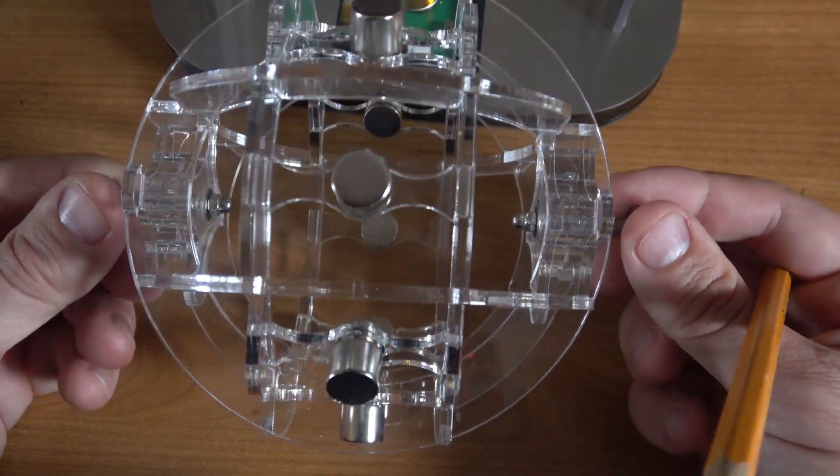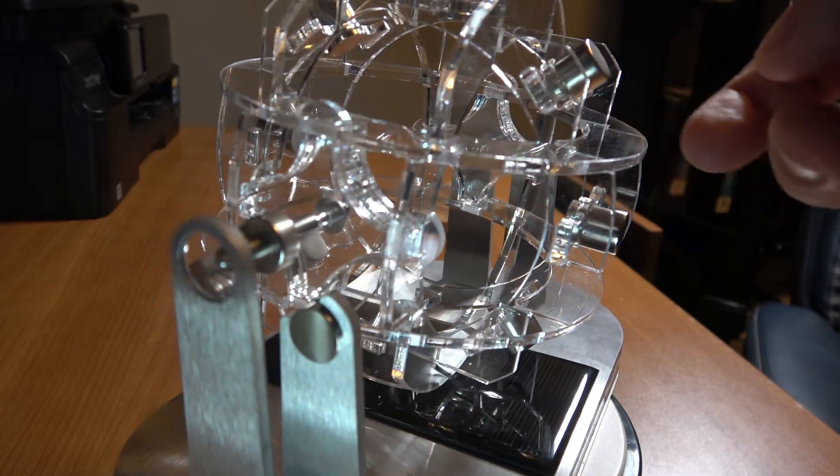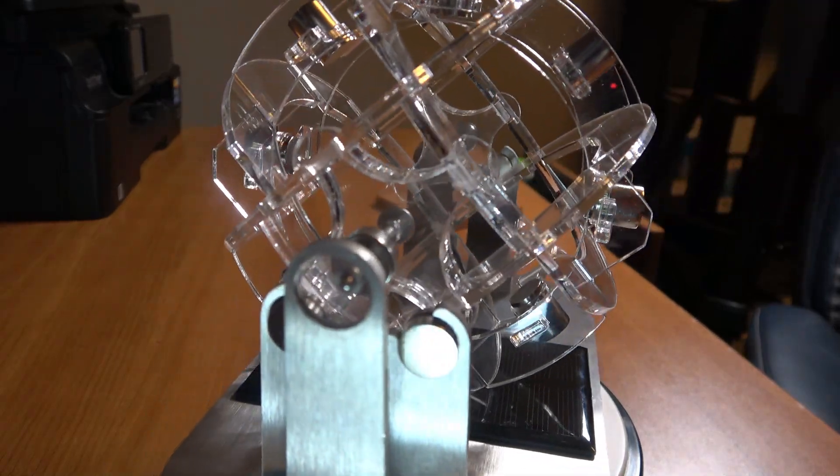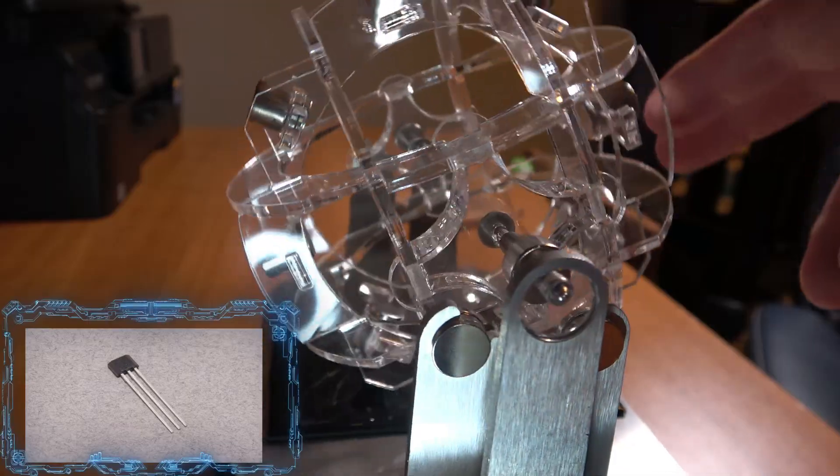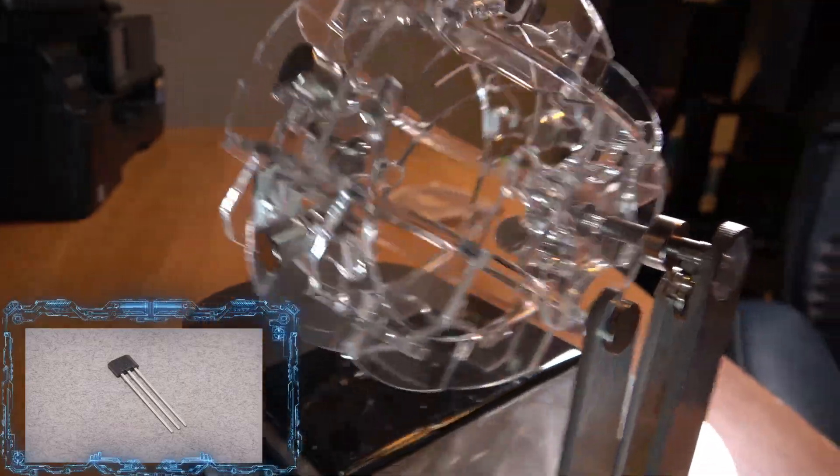The hall sensor is a very important component in a lot of different things including motors, ignition timing in engines, and even anti-lock braking. There are no moving parts so they are very redundant. High electron mobility materials such as gallium, indium, and graphene make up the sensor.